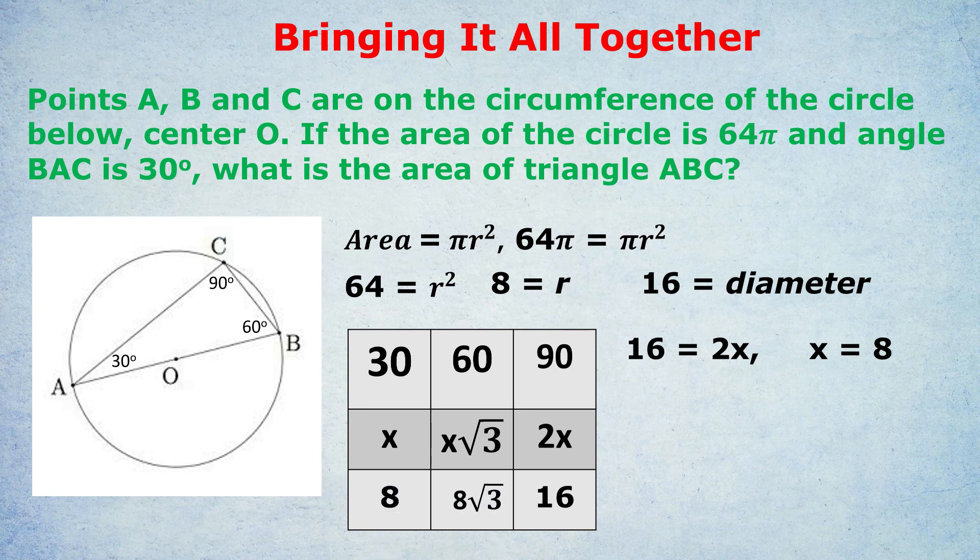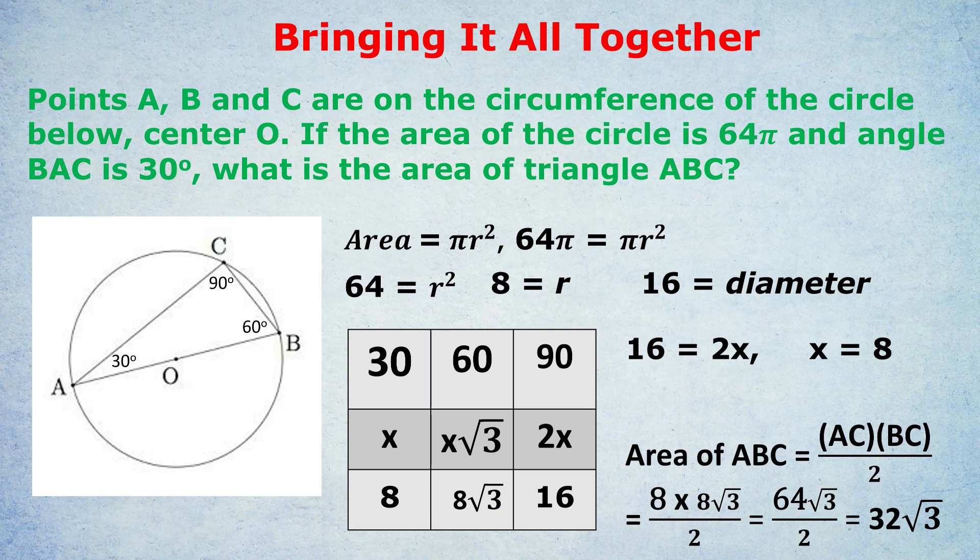The area in this case would be AC times BC - they're the base and height, the two sides next to the 90 degrees - divided by 2. Base times height divided by 2. That's 8 times 8√3 divided by 2. 64√3 divided by 2. 32√3 is the area of the triangle. All done just knowing the area of a circle and knowing our wonderful box.